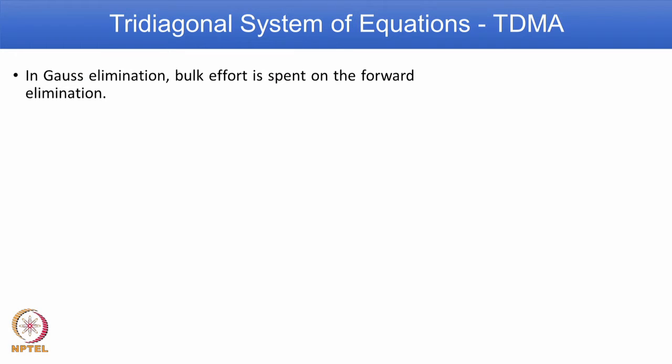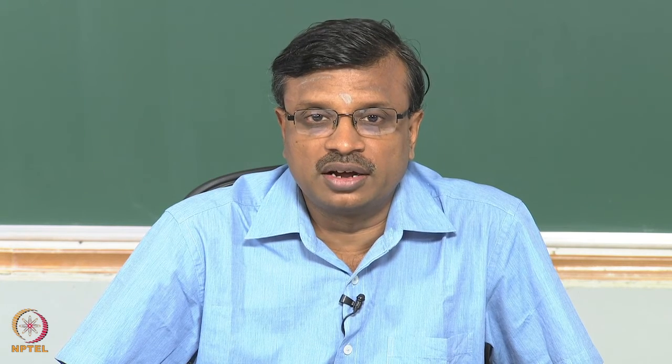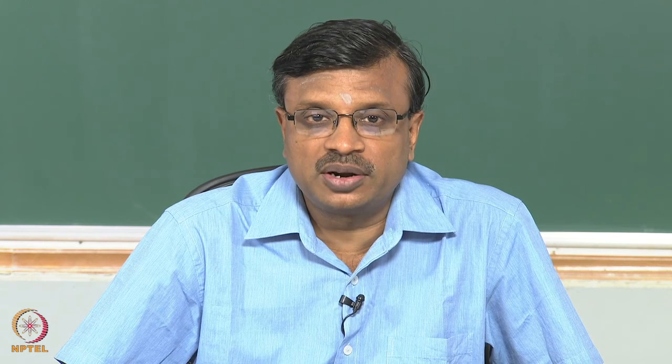We know in Gauss elimination there are 2 steps: forward elimination and backward substitution. The bulk of the time is consumed in forward elimination, because in backward substitution the matrix becomes completely upper triangular and we start from the last row, substitute, and get the unknowns. Hence most of the time is spent in the forward elimination process.